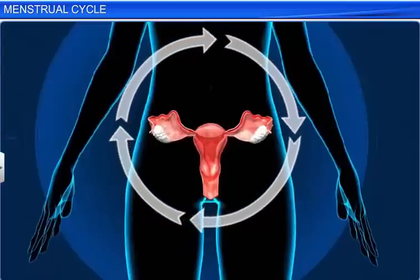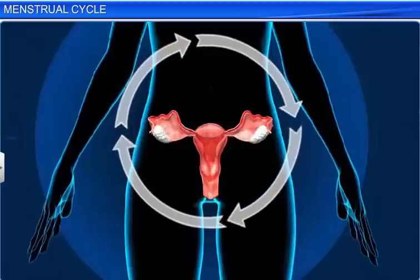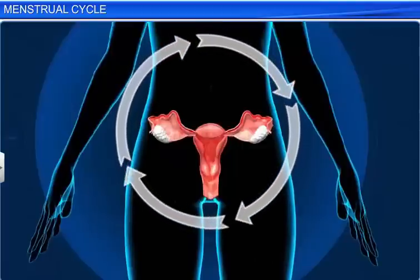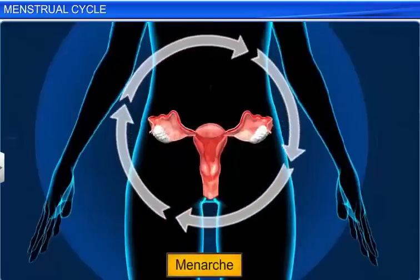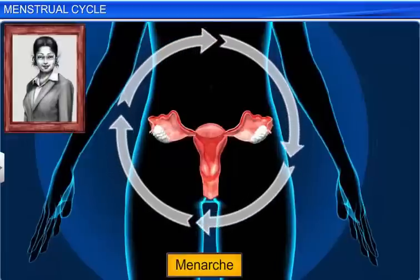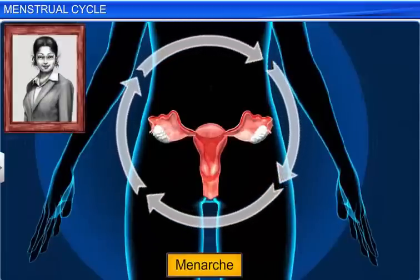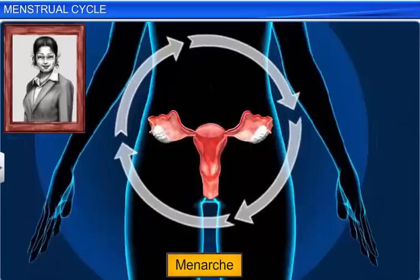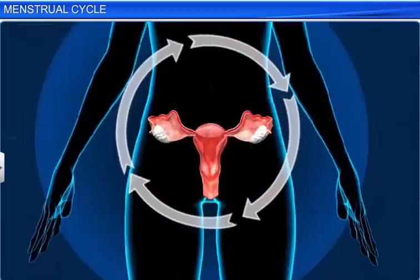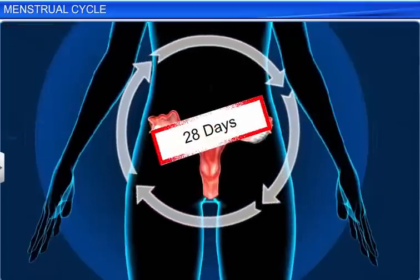Incidentally, a woman experiences her first menstrual cycle, called the Menarche, at the onset of puberty, usually between the ages of 9 and 12, occurring approximately every 28 days.